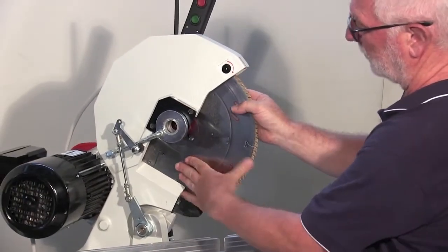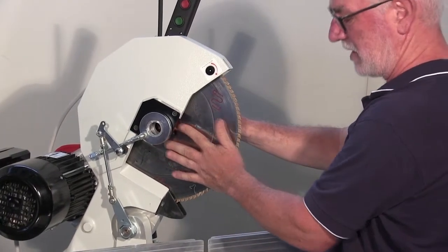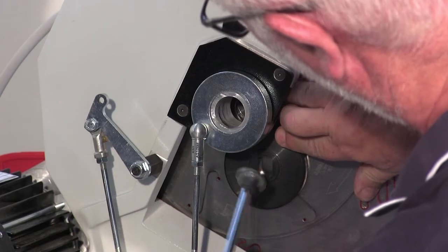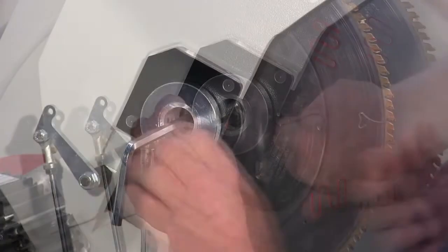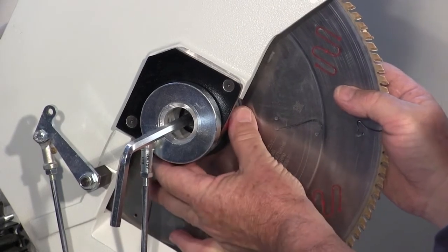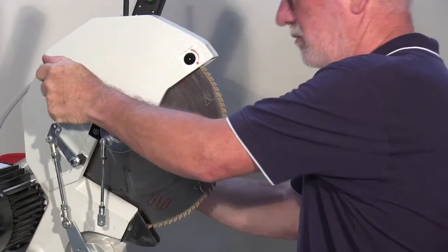Now I make the reverse operation. Insert the blade so that the central hole is positioned exactly in its seat. Insert the flange and the bolt with the washer. Then adjust the flange making sure that the raised part is facing inward. Turn the key counter-clockwise.